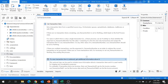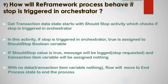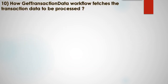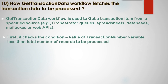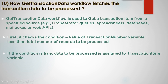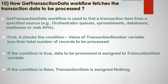The next question is: how does the Get Transaction Data workflow fetch transaction data? This workflow gets a transaction item from sources such as queues, spreadsheets, database, mailbox, or web APIs. It checks whether the transaction number is less than the total number of records. If true, data is assigned to the transaction item variable; if false, transaction item is assigned nothing.